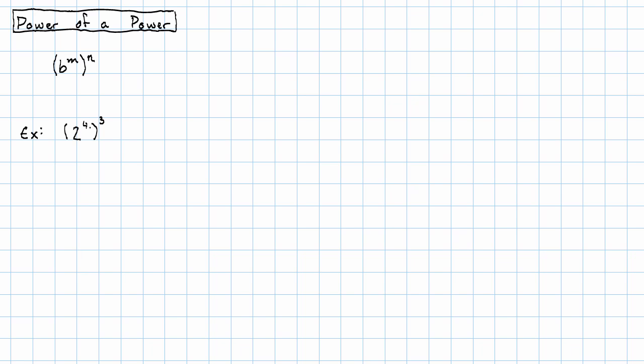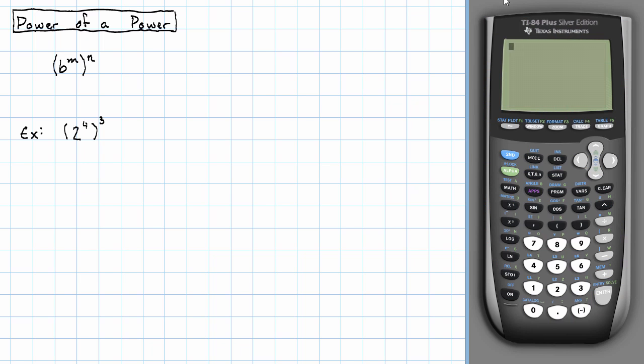And I'm going to look at an example. Let's say we have 2 to the 4th to the 3rd power. Now, if we were to actually calculate this, we would take 2 to the 4th in parentheses, the result to the 3rd power. We know what that equals. That equals 4096.